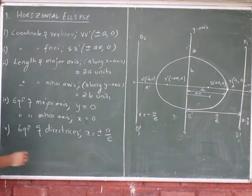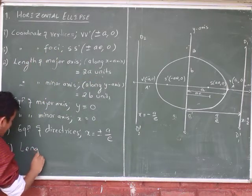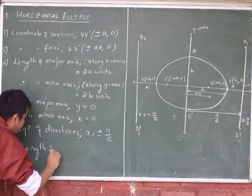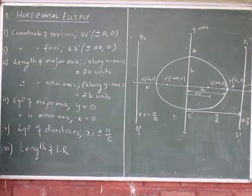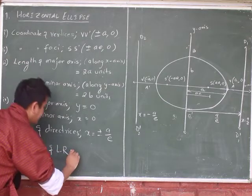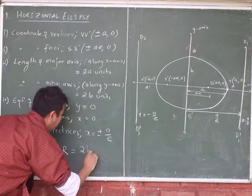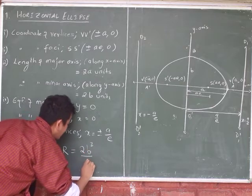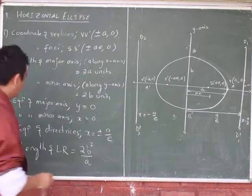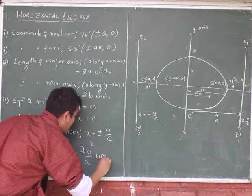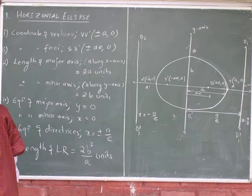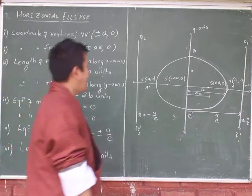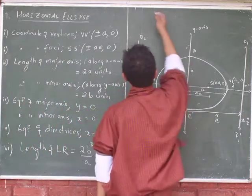Number six: length of latus rectum. The length of latus rectum is given by 2b²/a units.